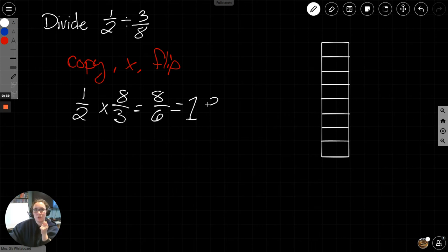How many is left over? 2 sixths. 2 sixths can be simplified. They can both be divided by 2, and I get 1 and 1 third.